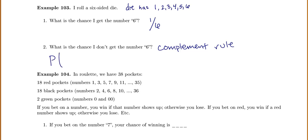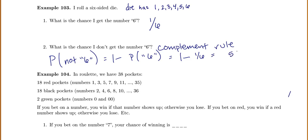The probability of getting a not-six is equal to one minus the probability of getting a six. One minus one sixth leaves five sixths. I could also count all the numbers that weren't sixes: one, two, three, four, and five — so five of them out of a total of six, giving five sixths.